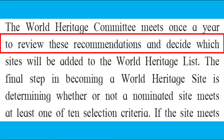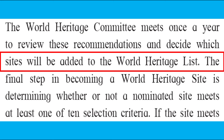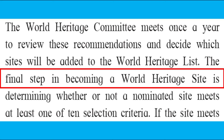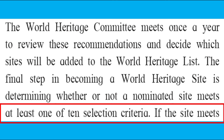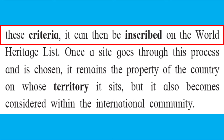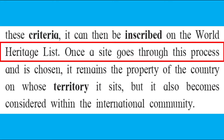These advisory bodies then make recommendations to the World Heritage Committee. The World Heritage Committee meets once a year to review these recommendations and decide which sites will be added to the World Heritage List. The final step in becoming a World Heritage Site is determining whether or not a nominated site meets at least one of ten selection criteria. If the site meets these criteria, it can then be inscribed on the World Heritage List.